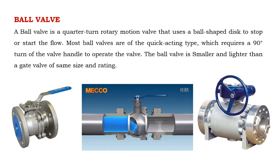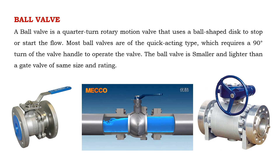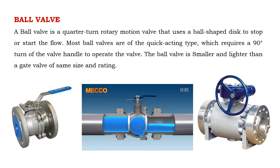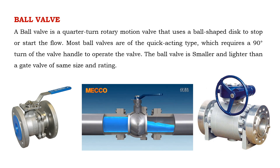A ball valve is a quarter-turn rotary motion valve that uses a ball-shaped disc to stop or start the flow. Most ball valves are of the quick-acting type, which requires a 90-degree turn of the valve handle to operate the valve. The ball valve is smaller and lighter than a gate valve of the same size and rating.